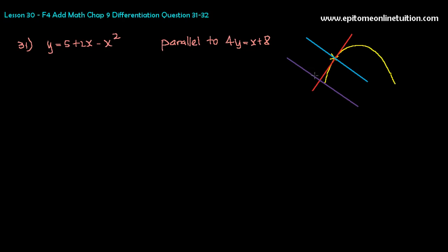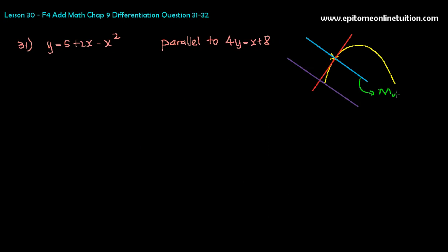So how are you going to start looking for the equation of the normal? The first thing you have to think is this: in order to find the equation of a normal line — the blue line — you will always need two things. You need the gradient, so you need to find the gradient of the normal. And you need a point to substitute in. So these two things, you do not have yet, so you've got to find them based on the information given.